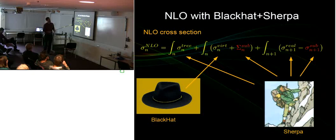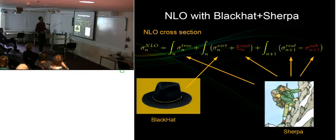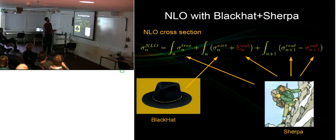This formula is also the list of tasks we can give to people. We get our results by combining two programs: BlackHat and Sherpa. We divide the tasks somewhat unfairly — we do the virtual part and let Sherpa do all the rest: the tree contribution, the subtraction, the real emission matrix element, and the relevant integrals.